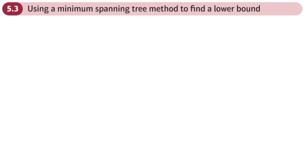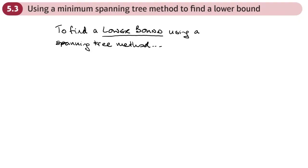This is the third section of chapter 5, the Travelling Salesman problem, and here we're going to be looking at using a minimum spanning tree method to find a lower bound. The following is what we're going to use to find a lower bound using a spanning tree method.